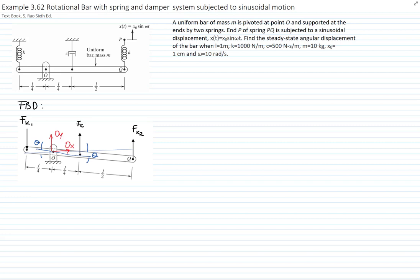The force of the first spring is K times the displacement x1. The displacement x1 equals L/4 times sine of theta. The force of the damper is C times the velocity at the point where the damper is located, specifically the velocity component along the damper.